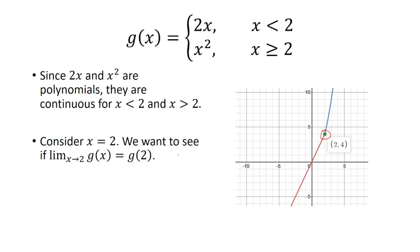In order for the function to be continuous, the limit as x approaches 2 of g of x has to equal g of 2. So first, let's quickly evaluate g of 2. We want to see which part of this piecewise function x equals 2 is a part of. That's obviously going to be the bottom one since x is greater than or equal to 2, so we plug it into x squared and get that g of 2 is 4.